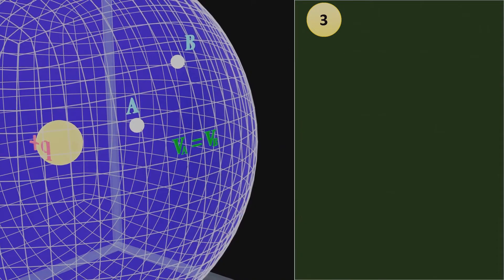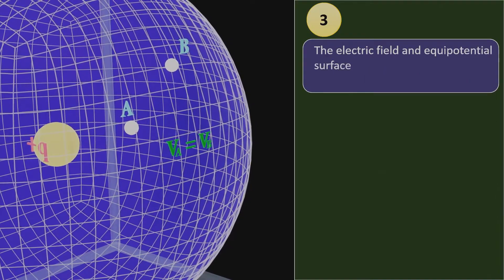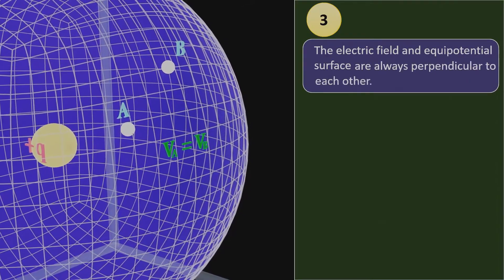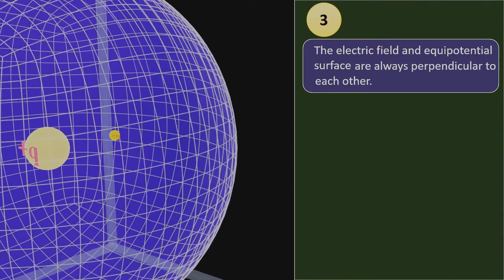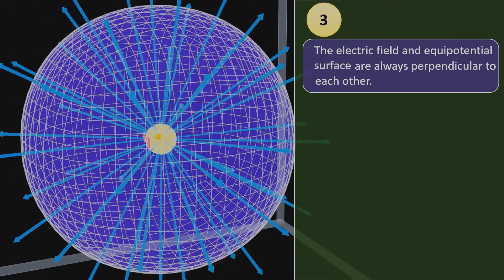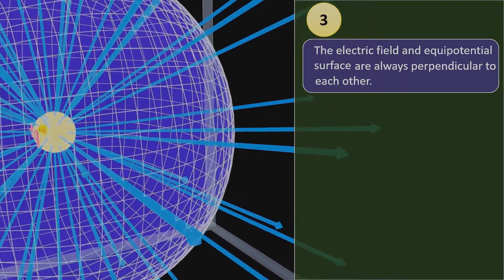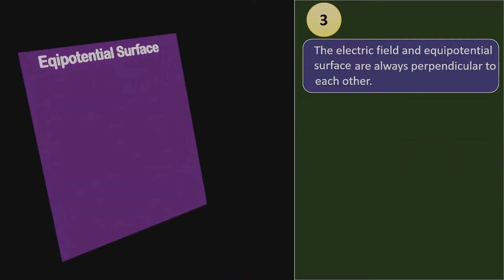The third and important property: the electric field and equipotential surface are always perpendicular to each other. This property can also be observed in the case of a point charge. We know that the point charge generates a radially outward electric field, and now we can see in the animation there is a 90-degree angle between the electric field and the equipotential surface. However, it's better to prove this, so let's assume an equipotential surface, meaning that the potential at any point on this surface is the same.